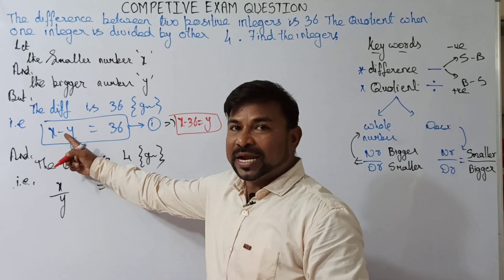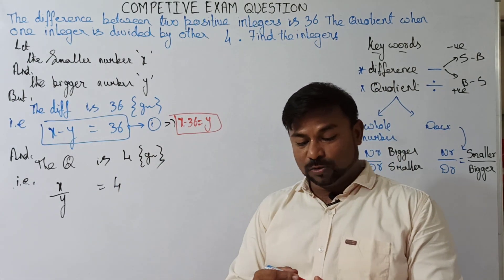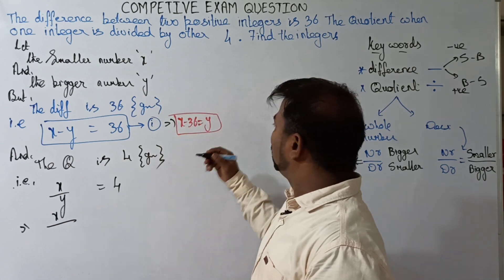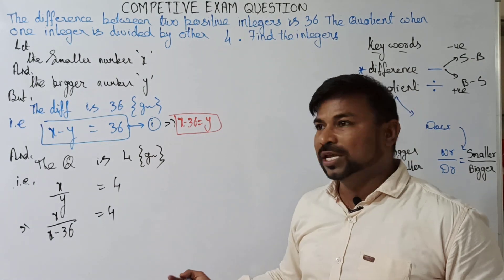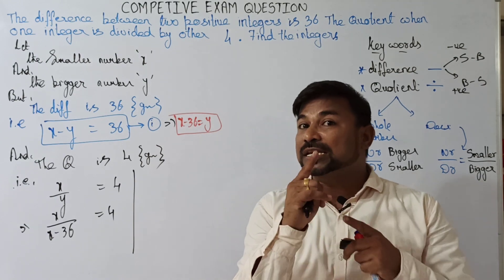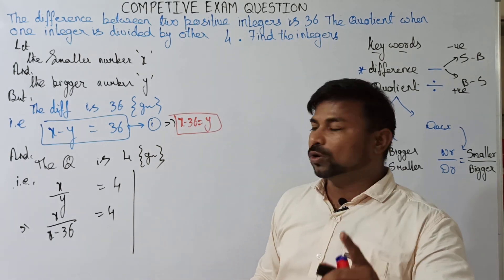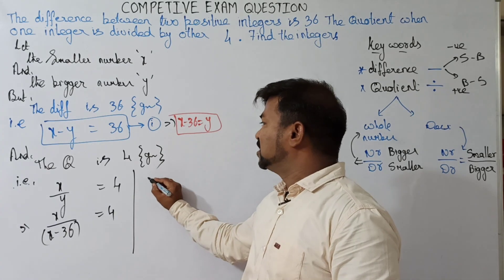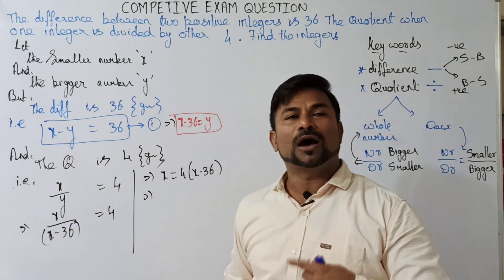So y equals x minus 36. Now substitute this value of y into the second equation, giving us x divided by (x minus 36) equals 4. With only one variable and one equation, we can solve. Always keep a bracket and cross-multiply, giving us x equals 4 times (x minus 36).